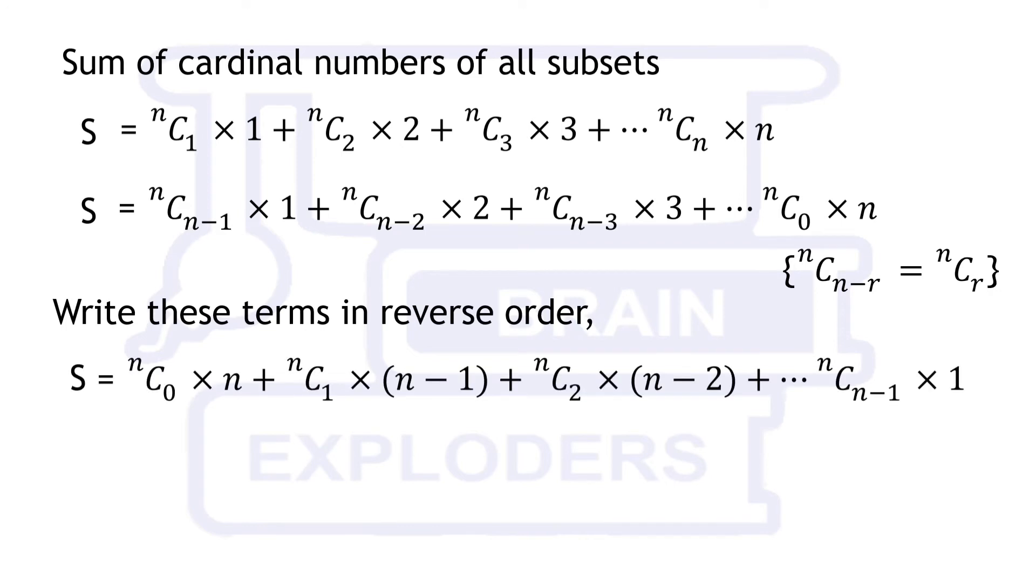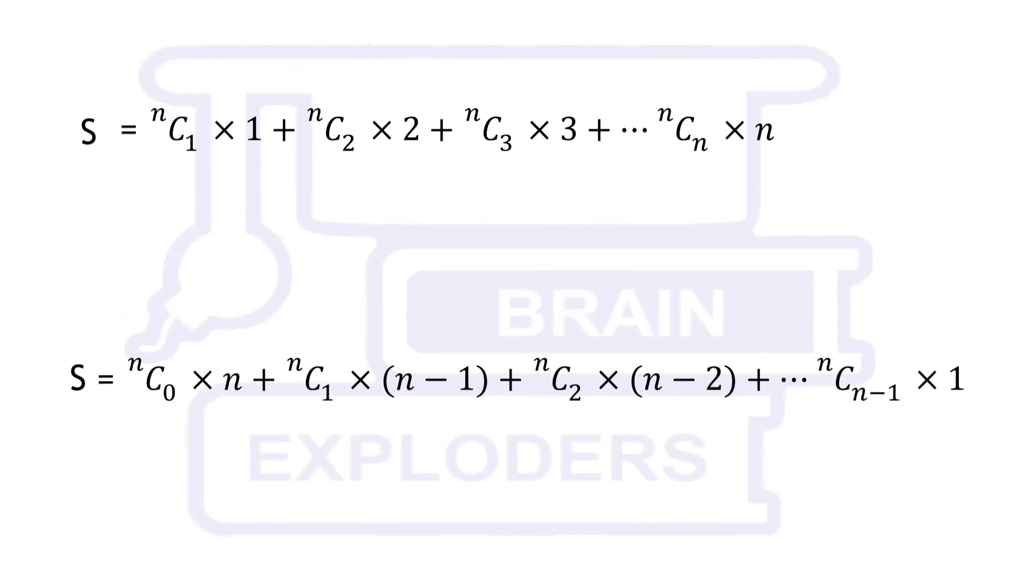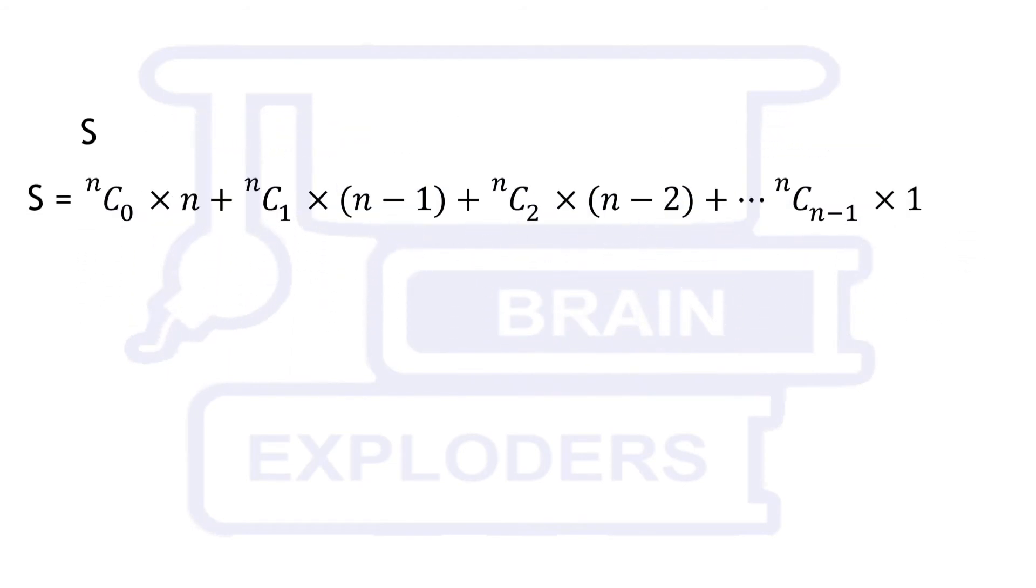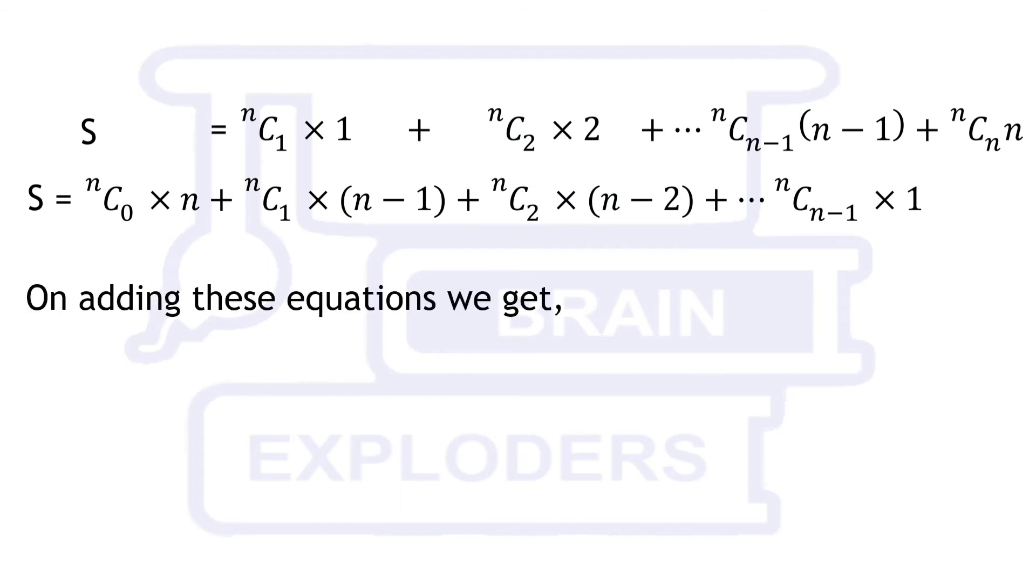Write these terms in reverse order. Place this equation under the previous one such that nc1 is below nc1, nc2 is below nc2 to get rid of any confusion in addition. Now, add these equations.